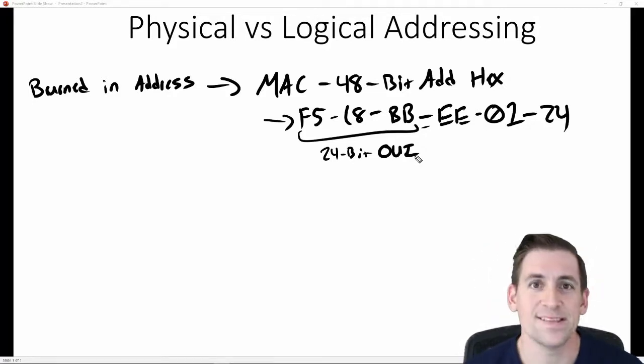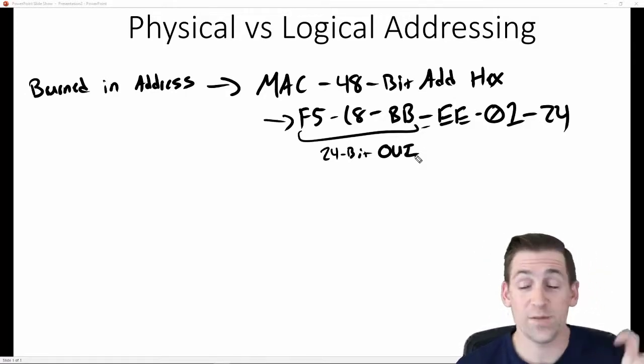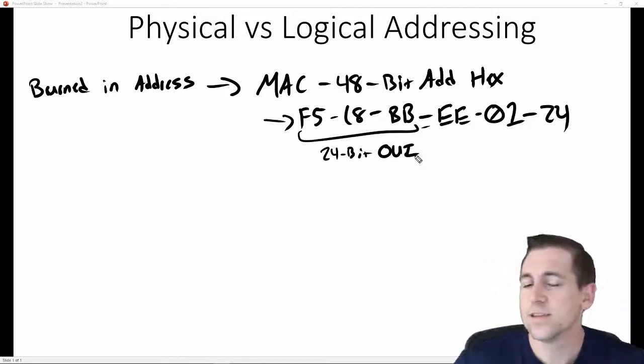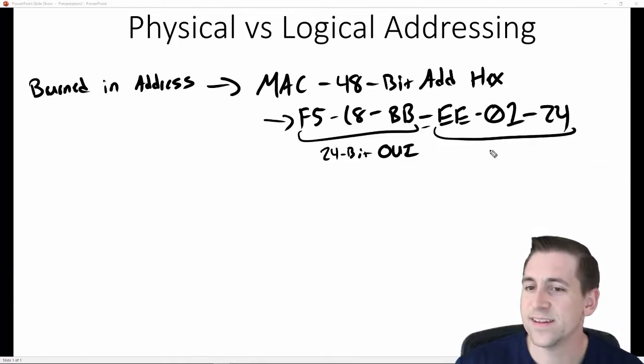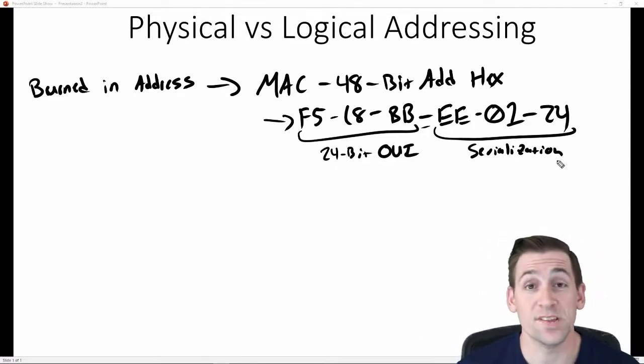Something like Asus for an Asus motherboard and the NIC associated, Ubiquity for Ubiquity networking equipment, Cisco, Juniper, Palo Alto. The first 24 bits are associated with that vendor, and the last 24 bits are a serialization.